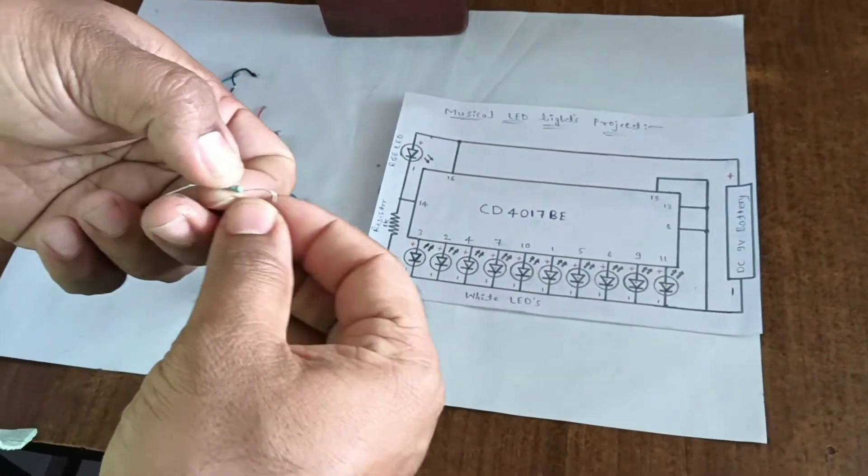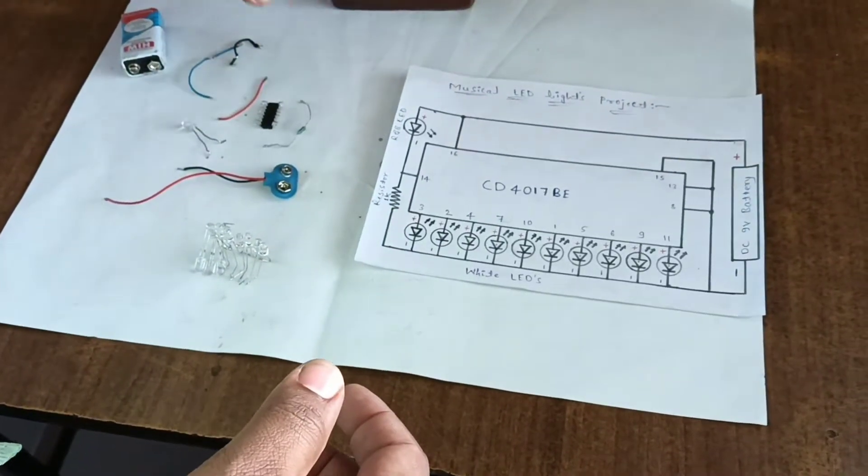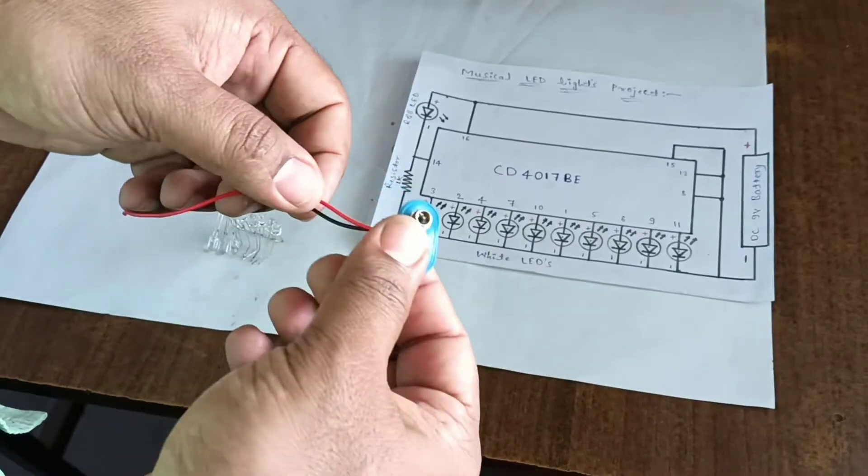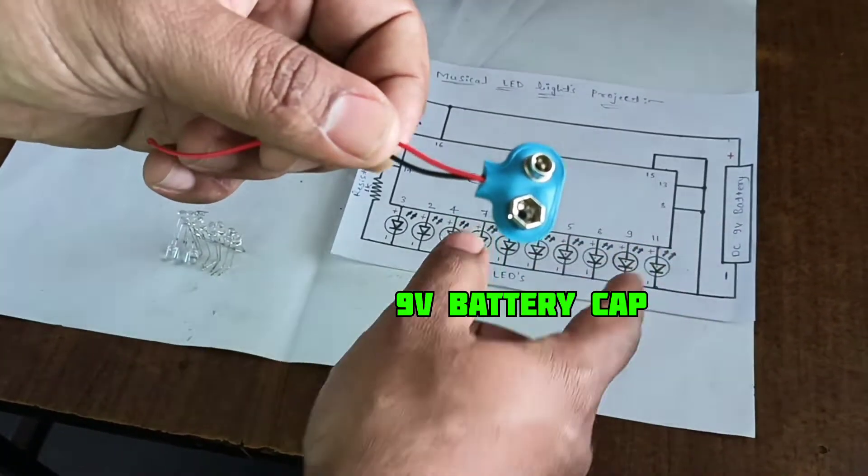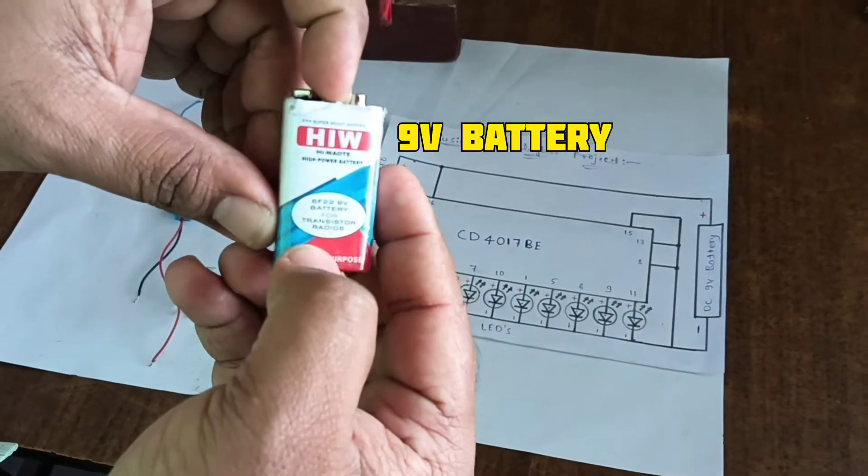And next, 1 kilo ohm resistor. This is the 9-volt battery cap. This is the DC 9-volt battery.